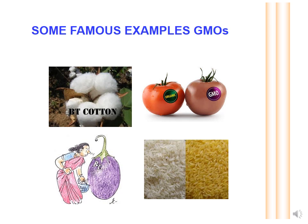The third example is Bt brinjal, which carries a gene from Bacillus thuringiensis for pest resistance. The fourth picture is of Golden rice, a genetically modified rice containing a beta-carotene gene from the daffodil plant and bacteria. It was developed to combat vitamin A deficiency and improve nutrition in developing countries.